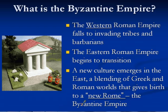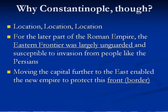In the east, a new culture emerges that blends Greek and Roman ideals, and this becomes the new Rome. When we think about the Byzantines, again, we've got to think of this blending of Greek and Roman culture.